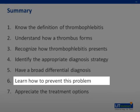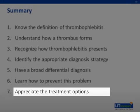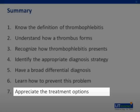Number six, prevention includes ambulation, compression stockings, and treating varicose veins. Number seven, the treatments — remember the initial treatments are warm compresses, leg elevation, ambulation, and compression stockings. NSAIDs such as ibuprofen or Motrin are usually used, but the Cochrane Review also showed that low molecular weight heparin, or enoxaparin, is another good option for preventing the extension of thrombophlebitis.